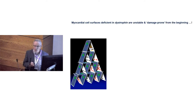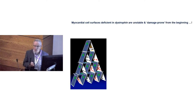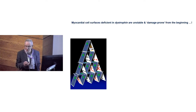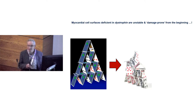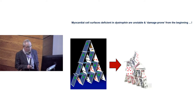To simplify: in Duchenne, Becker, and affected carriers, cells deficient in dystrophin are mechanically unstable. Over time, just with the normal action of the heart, the heart begins to tear itself apart, and the repair mechanisms are swamped and can't replace what might otherwise constitute normal repair.